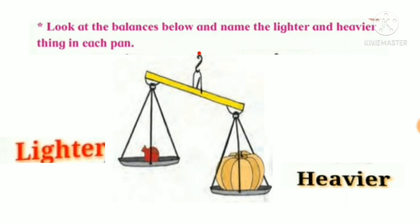Now look at the balances below and name the lighter and heavier thing in each pan. Now on the screen you can see a scale. It is also called balance. Now in that you can see we have kept two things. On one side there is a pumpkin and the other side you can see there is a fruit pomegranate. Now tell me students which one is the heavier one and which one is the lighter one? Yes y'all are right.